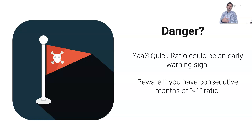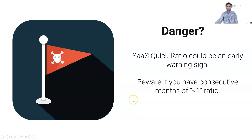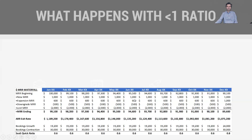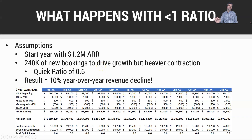There's a danger sign here, and the SaaS quick ratio can give us a heads-up if we're headed in the wrong direction. Beware if you have consecutive months of a less-than-one ratio. Or if you have fast-moving data — lots of signups, lots of transactions — you might measure this on a weekly basis to get an early warning if your net inflow or outflow is headed the wrong way.